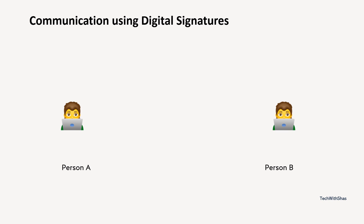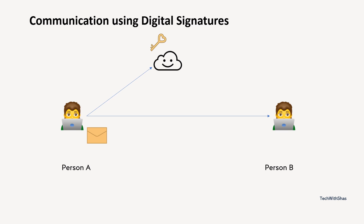So person A is going to create a public key and private key first. Then that public key is stored in a central service or cloud service. Anybody can get the public key and use it to decrypt his messages. Person A will create a message to be sent to person B, and that will be encrypted with his private key. When sending it to person B, it is safe and secure. Person B will get the key from the central repository or cloud and use it to read the message. So this communication is secured by the public key and private key infrastructure.